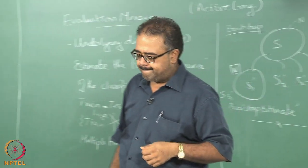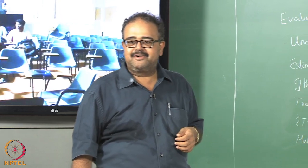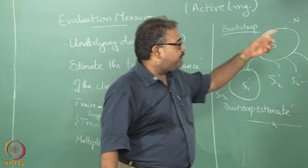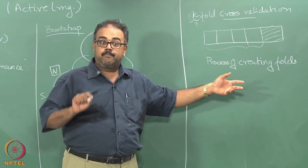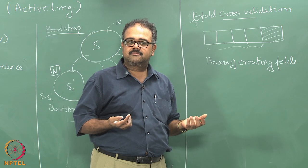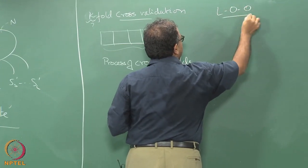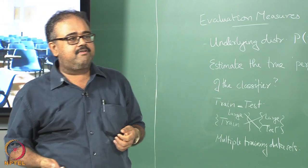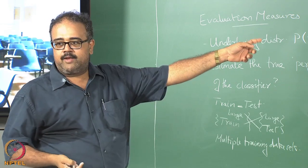There are a few caveats: what is K, and the actual process of creating folds. Typically K is 5 or 10. The more the number of folds, the stronger the variance reduction properties, provided the folds are large enough. There is a very special kind of cross-validation: if you create K folds when you have K data points, it is called leave-one-out cross-validation.